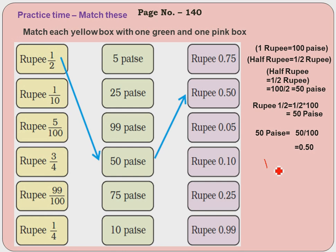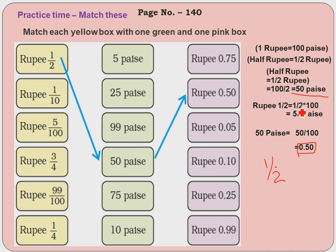If 1 rupee is there, we can write it as 100 paisa. Half rupee can be written as 1/2 of a rupee, or 50 paisa, or in rupees as 0.50. For the first example, rupee 1/2 — to convert into paisa, multiply by 100: 1/2 × 100 = 50 paisa. To convert 50 paisa back into rupees, divide by 100: that is 0.50.